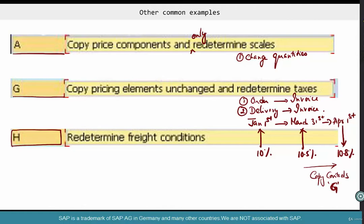H is redetermine only freight conditions. You know, you can't help but wonder, how does SAP know that only freight conditions needs to be redetermined, not anything else? There should be some way of identifying all the flight conditions. So, the question here is, how does SAP identify all flight conditions?